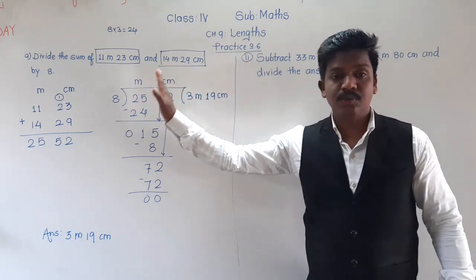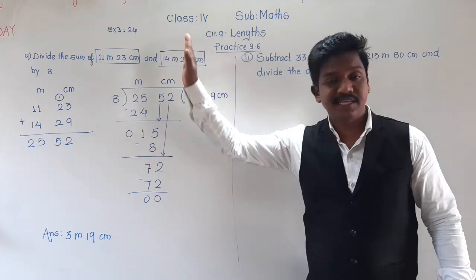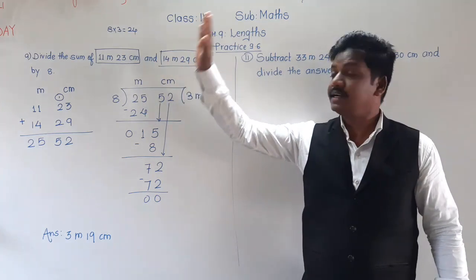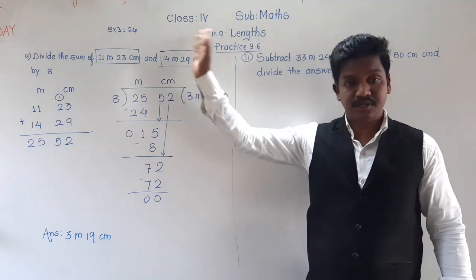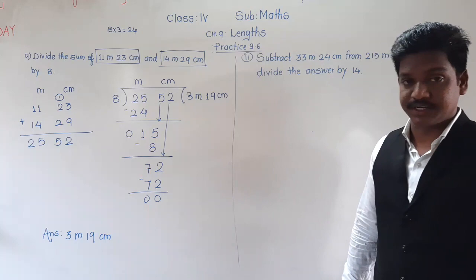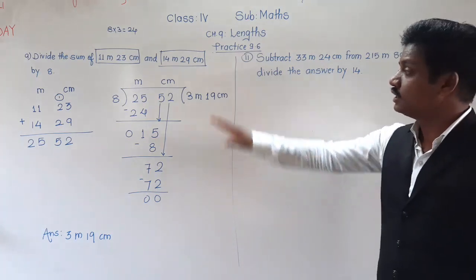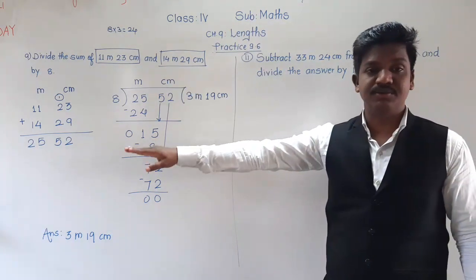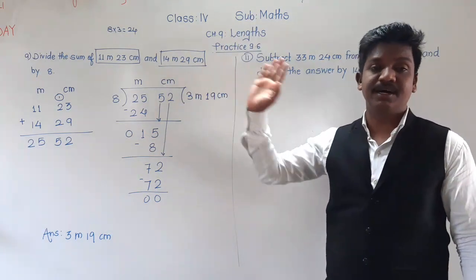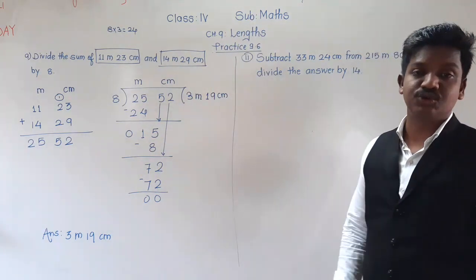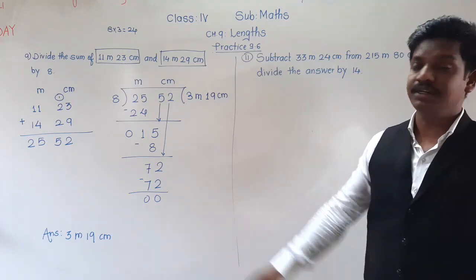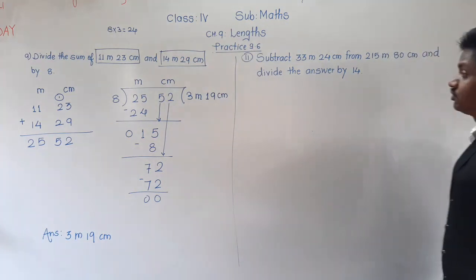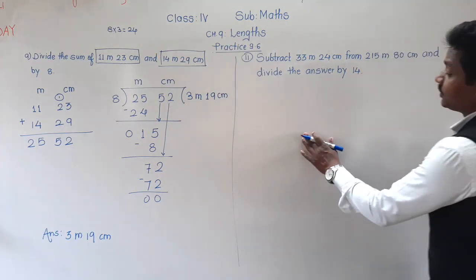Now example number 10: the problem is the same — divide the sum of the two given lengths by 15. First find the sum, then divide by 15. You should know the table of 15; write it beside your work and it will be easy to divide.